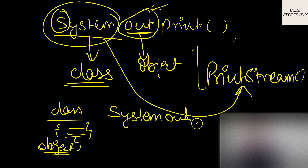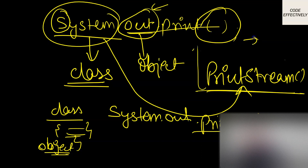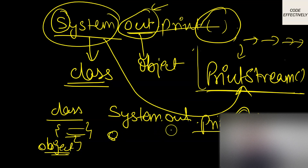So what is the difference between println and print? In PrintStream there are two methods: println and print. With print, you can print the entire thing you want on the same line — the cursor won't move to the next line. But whenever we use println, something different happens.